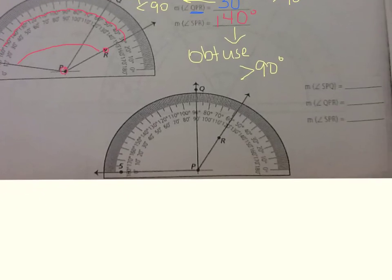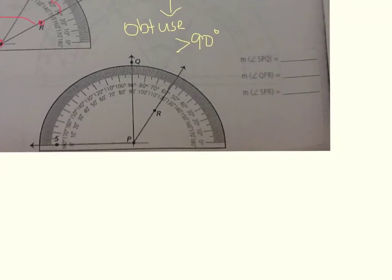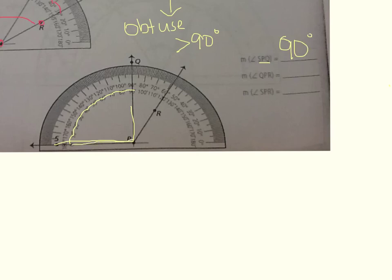Let's look at the bottom one. We're going to go from S to P to Q. Let's count: 10, 20, 30, 40, 50, 60, 70, 80, 90. This time it ended up saying the same number that it's sitting on. Why did that happen? Because this line right here is sitting on zero. So if we just follow that, we can see that it's 90 degrees.